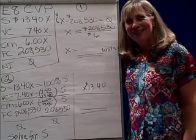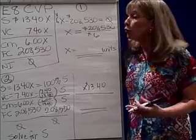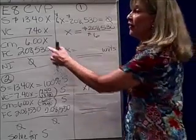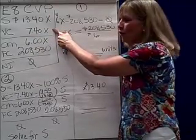Cost-Volume-Profit Analysis. We've been talking about exercise eight, and you'll recall we set it up by saying that sales is equal to the selling price, $1340, times the units sold.